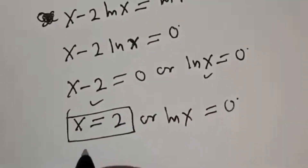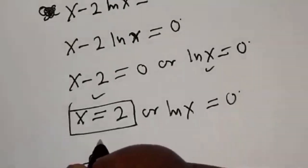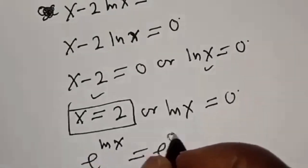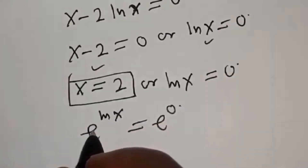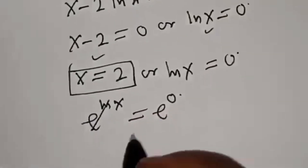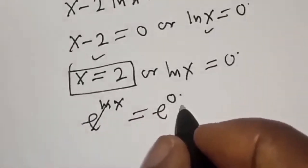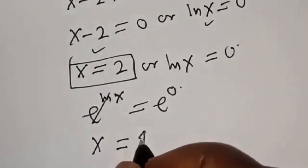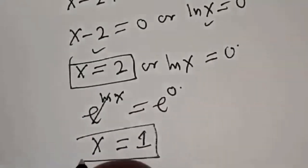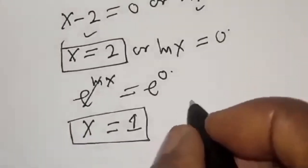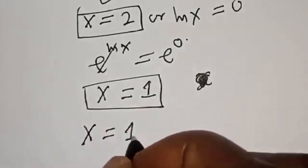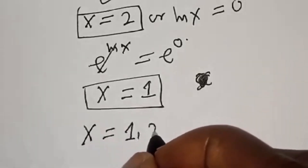From the second case, natural log of s equals 0. Introducing e, we have e raised to power 0 equals s, and e raised to power 0 is 1, so s equals 1. That is the second value of s. Therefore, our answers are s equals 1 and s equals 2. That is our final answer.